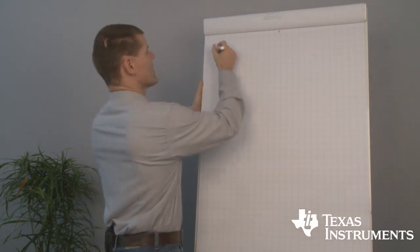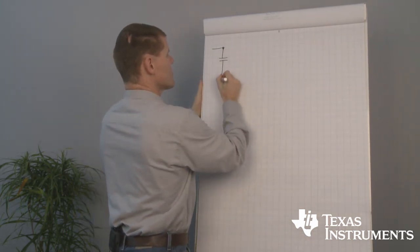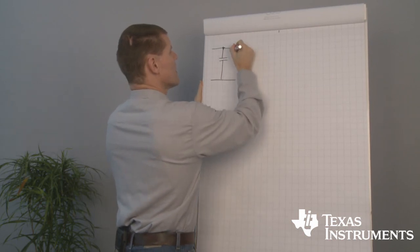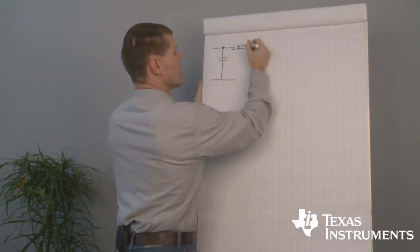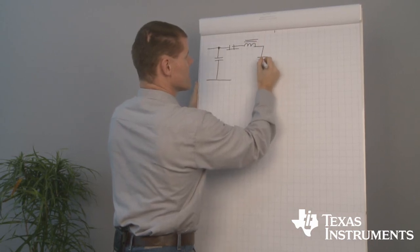Let's start with the buck converter. We already learned something on this topology. We need the input capacitor, we got the high side switch, storage choke and the output capacitor.